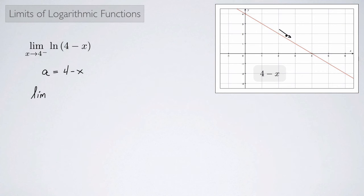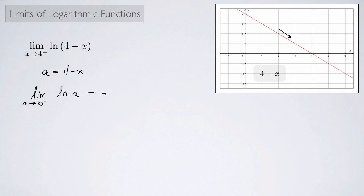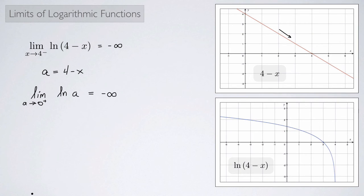Since we have positive values as we get closer, I can rewrite this as: a approaches 0 from the right of the natural log of a. We know what that is — it's a limit we've seen before — this equals negative infinity. So for the same reason, we would expect this limit to be negative infinity. Looking at the graph of ln(4 - x), as x approaches 4 from the left, it does indeed appear that the natural log of 4 minus x is approaching negative infinity.